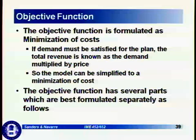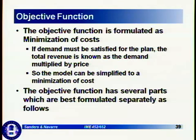Much like we explained for NAMIAS, the objective function is formulated as a minimization of cost. If demand is to be satisfied for the plan, total revenue is known and demand is simply multiplied by the price, so the model is simplified to a minimization of cost. The objective function has several parts, which are best formulated separately, and then we'll pull it all together in the end.